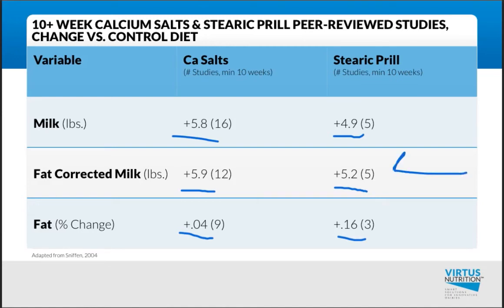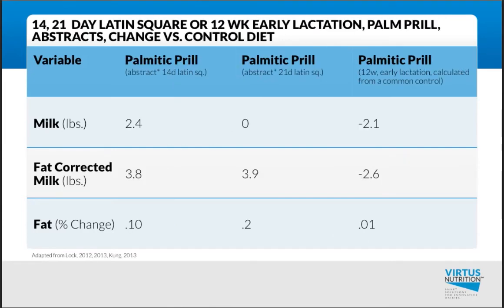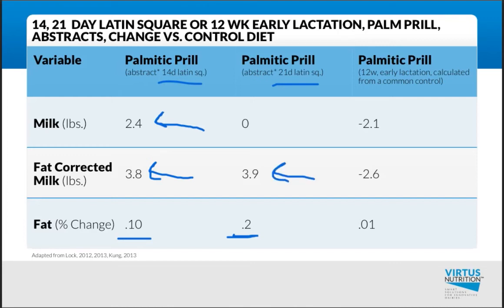Moving to palmitic prills, which have recently come onto the market, there is some research available, primarily shorter-term Latin squares — 14-day and 21-day studies. With palmitic prills at 14 days, we see 2.4 pounds of milk, 3.8 pounds of fat-corrected milk, and 0.1% fat change. They've been mainly sold on fat change, so looking at the 21-day study, we see 0.2% fat change. However, looking at the overall change, it's 3.9 pounds of fat-corrected milk with essentially no difference in milk in the shorter term.